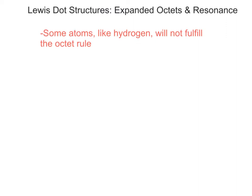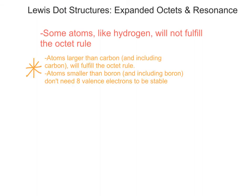While some atoms can form expanded octets and take more than eight valence electrons, there are also atoms that are too small to handle eight valence electrons. The rule of thumb is that carbon and any larger atoms will fulfill the octet rule, while boron and smaller atoms don't need to fulfill the octet rule to be stable and can have less than eight valence electrons.